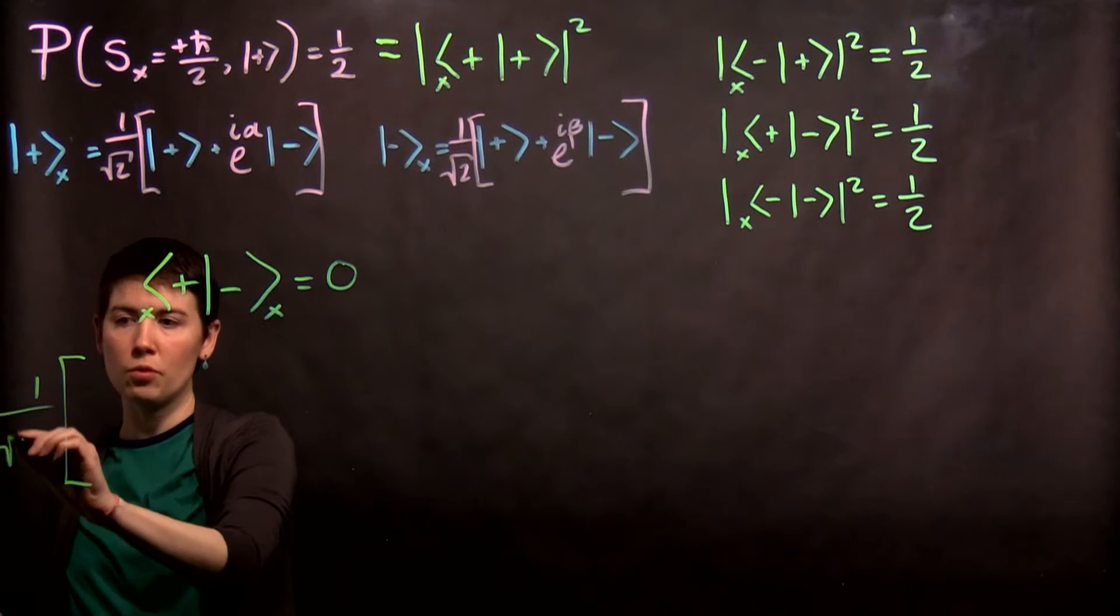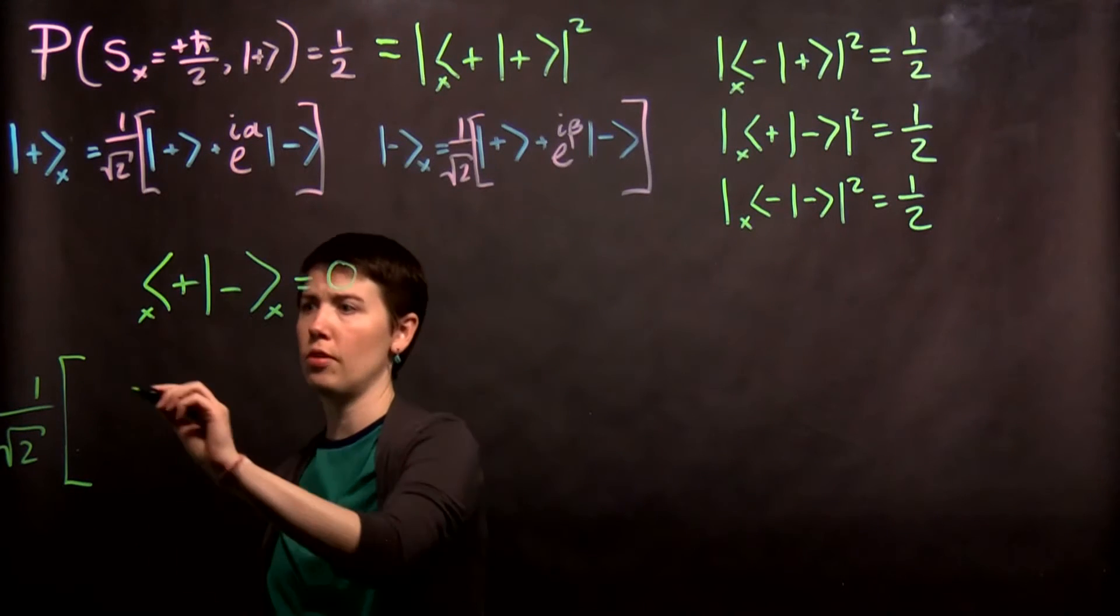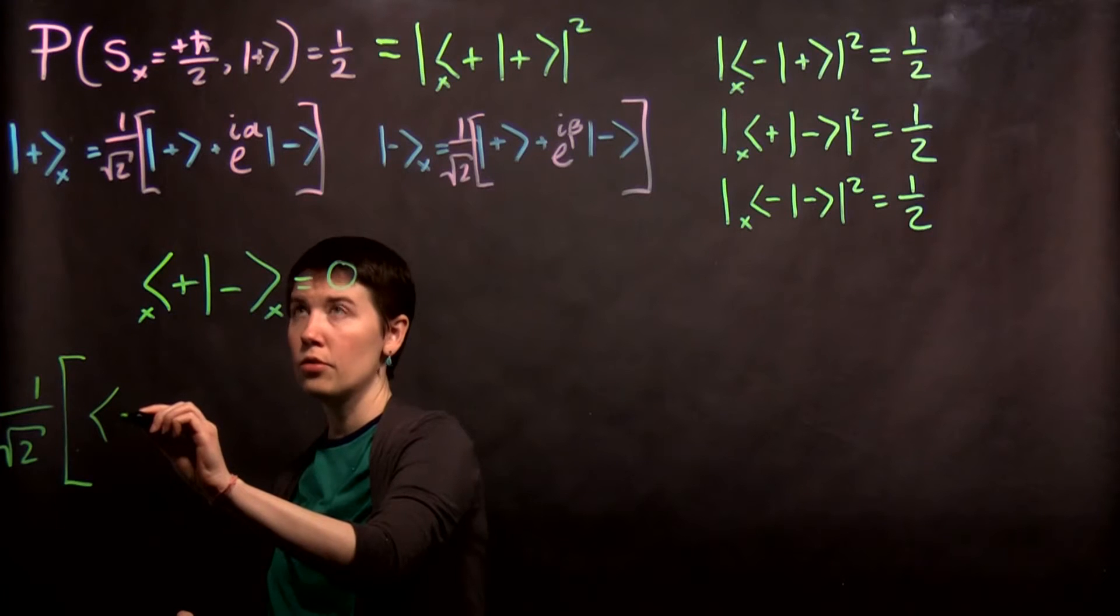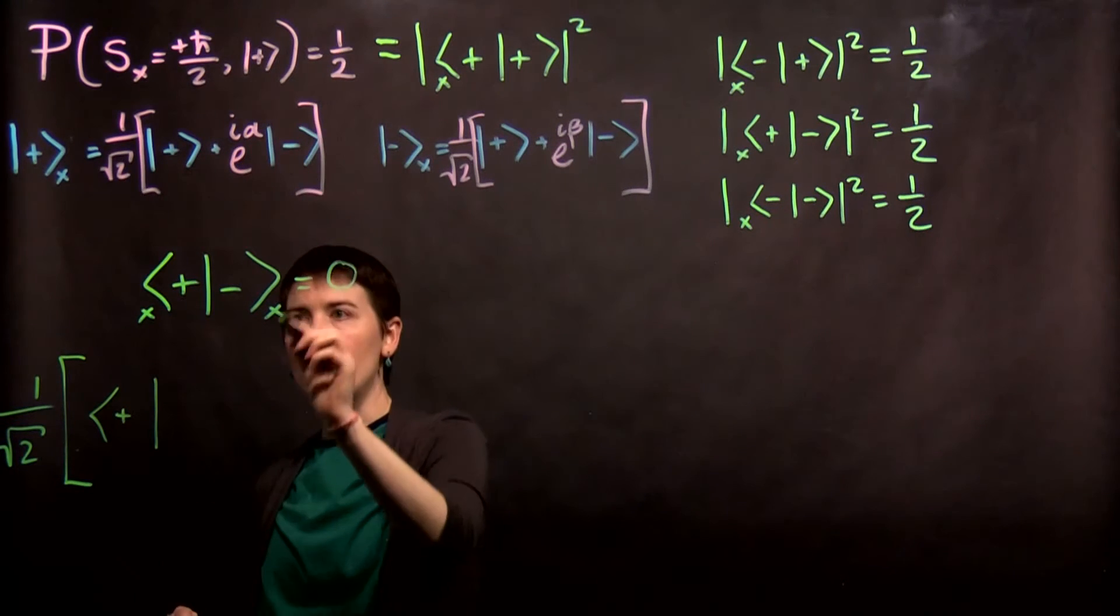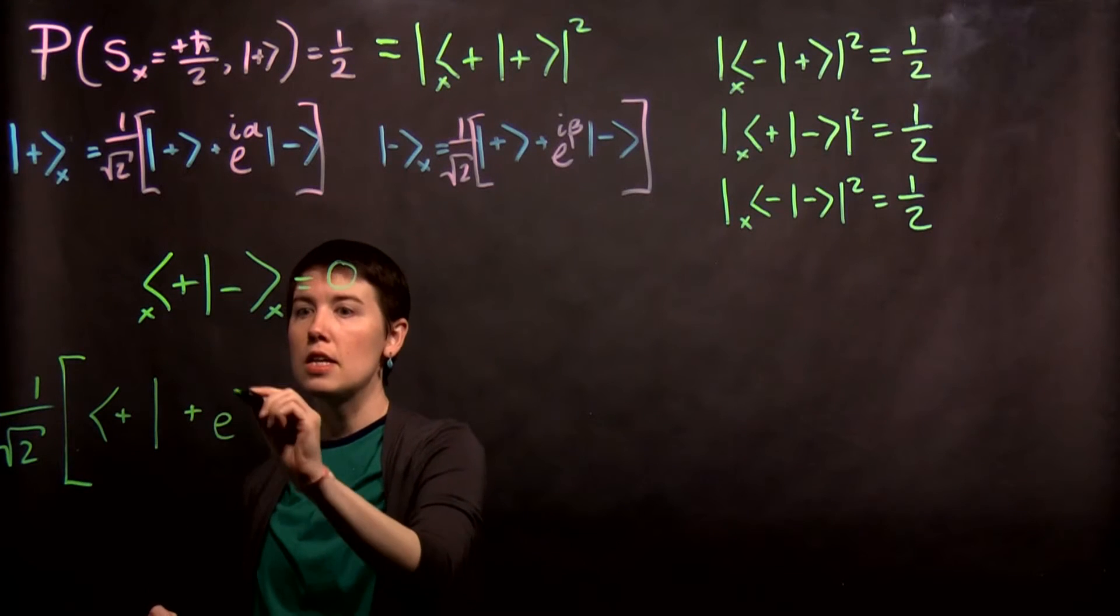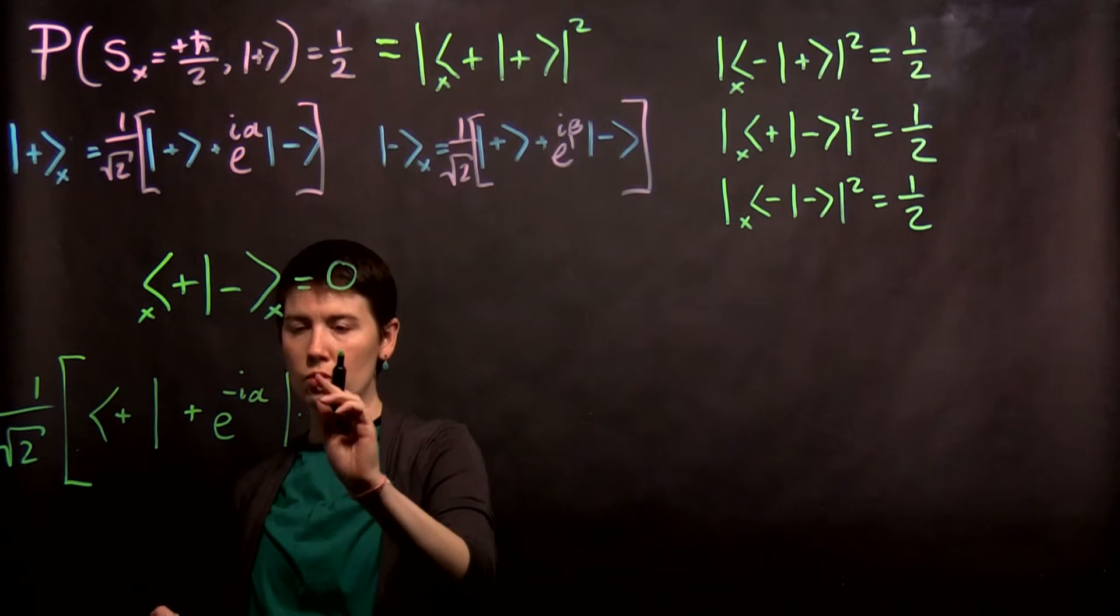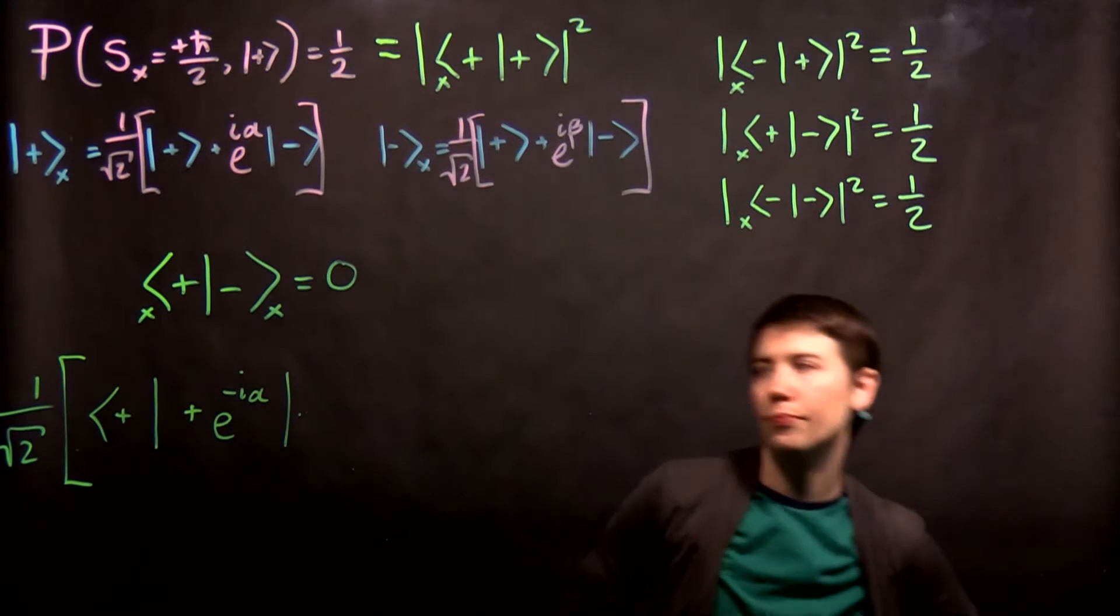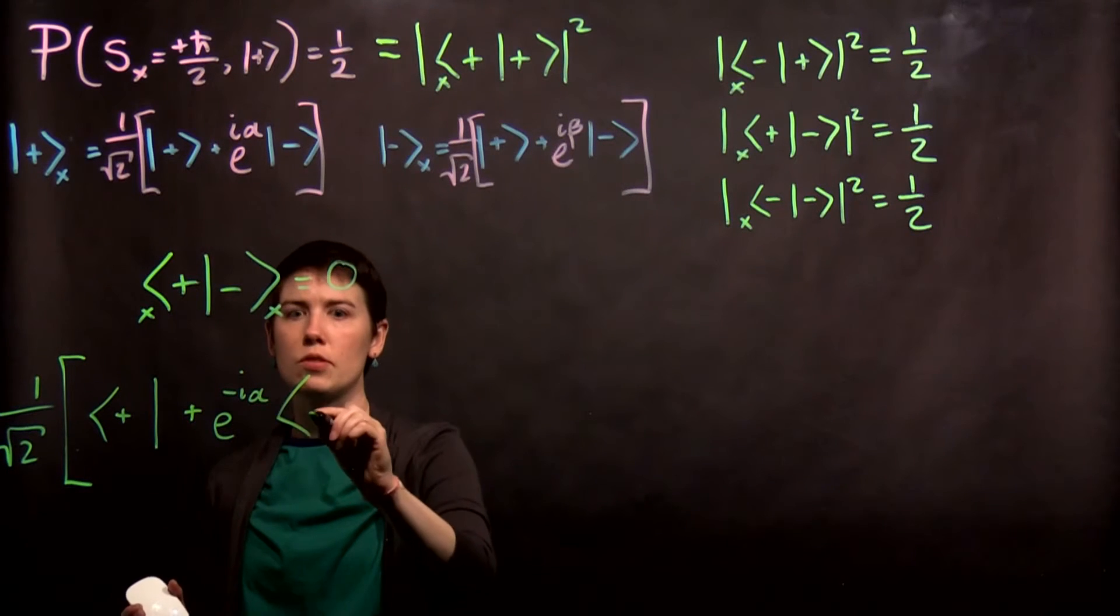So I'm going to first pull out that 1 over square root of 2, and now we need to go from ket to the bra state. And now this e to the i alpha, because this is becoming our bra state, it's going to be e to the negative i alpha. And then that spin down—oops, I made a mistake. That spin down bra state.